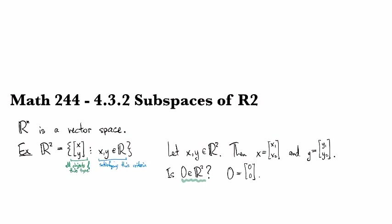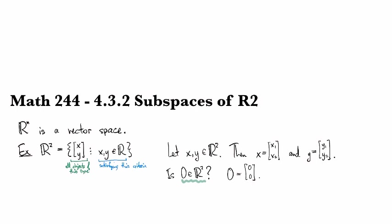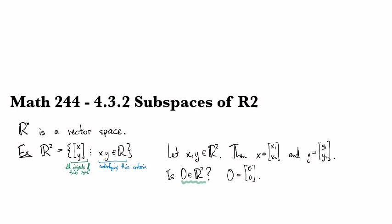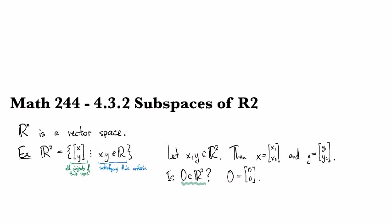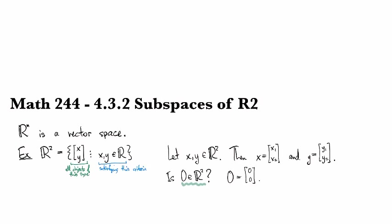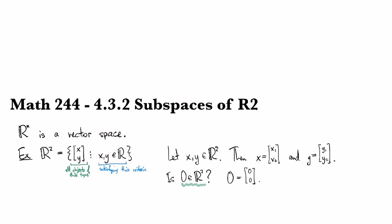So when we say, does a vector space contain 0, we mean contain the appropriate idea of 0 for that set. So it should be clear from the context.